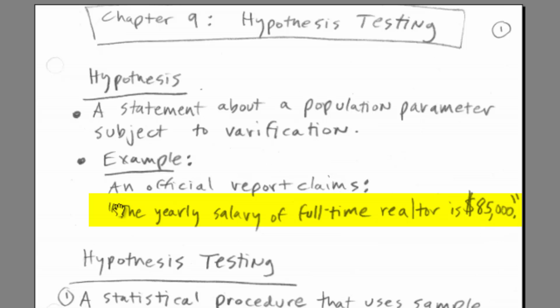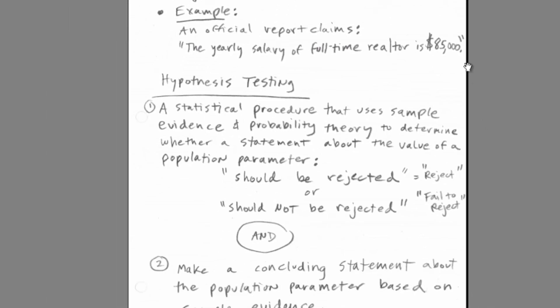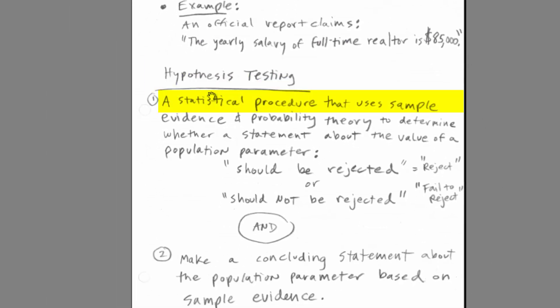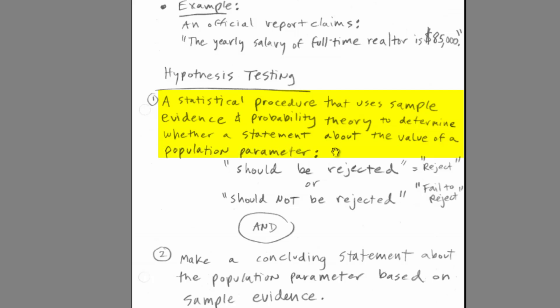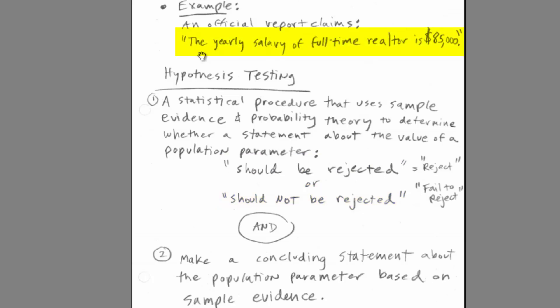We'll use this example to examine the five steps of hypothesis testing, and in later videos we'll look at lots of different examples. Hypothesis testing is a statistical procedure that uses sample evidence and probability theory to determine whether a statement about the value of a population parameter should be rejected or should not be rejected.